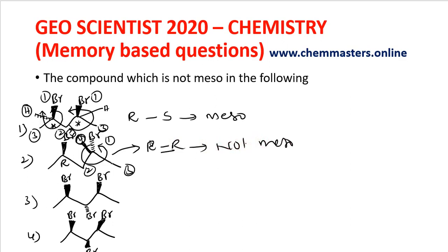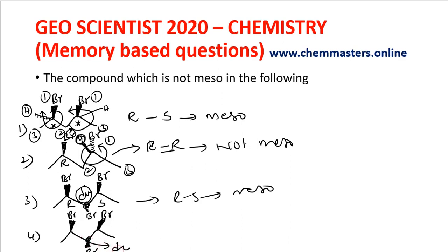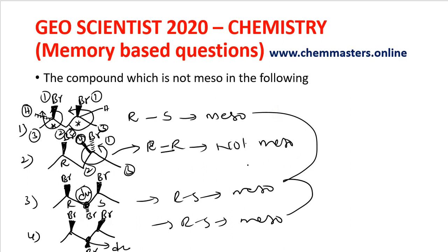For the third compound, we get R and S — take this as a dummy chiral center — so it should be meso. For the fourth compound, taking the dummy chiral center gives RS, which is also meso. So the first, third, and fourth are meso compounds, and the second one is not meso. That is our answer.